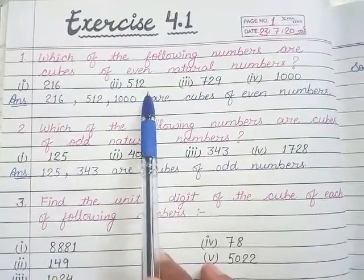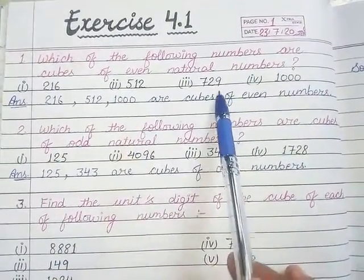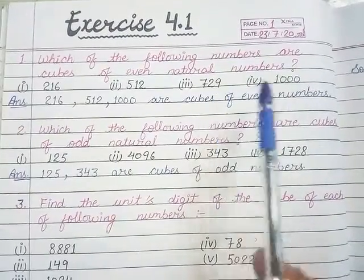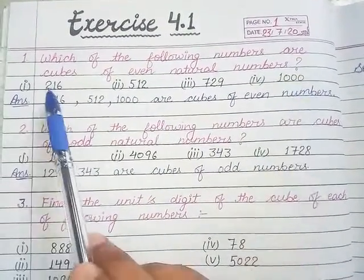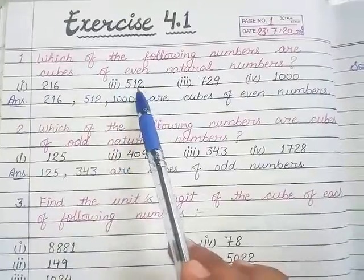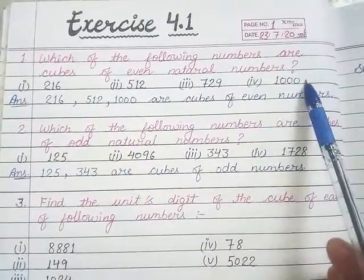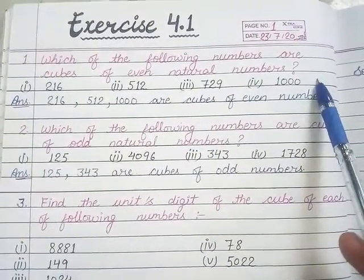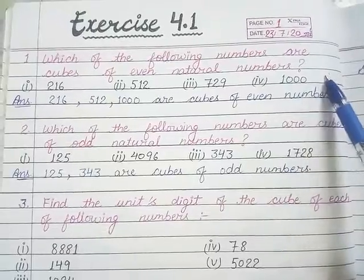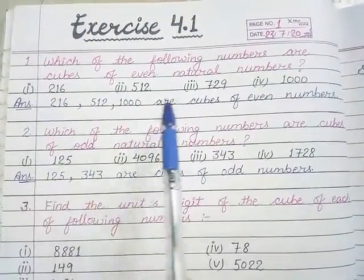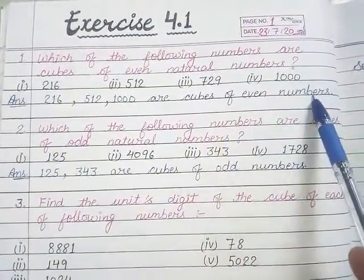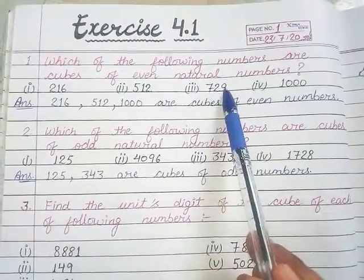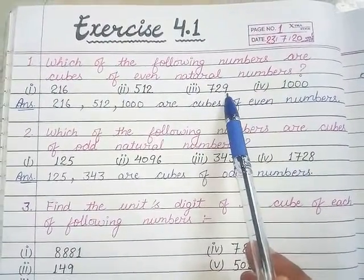Look, 216 - here the last digit is 6. 512 - the last digit is 2. 729 - the last digit is 9. 1000 - the last digit is 0. This means 216, 512, and 1000 are even numbers. So their cubes are also even numbers. These three are cubes of even natural numbers, and 729 is not because it's an odd number.